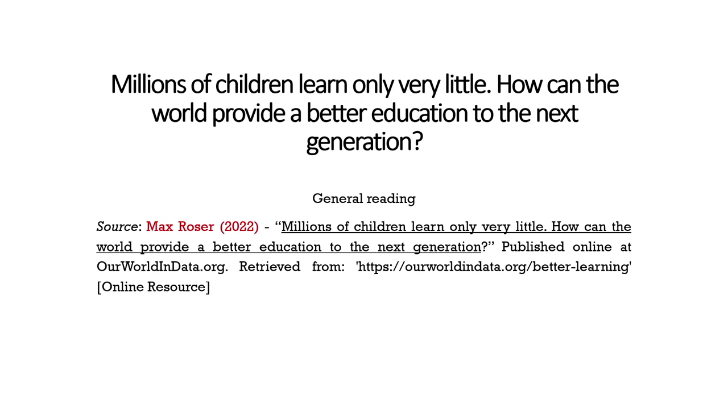In this class, we will study important concepts in demand for education economics. Before that, I would like to discuss a general reading — a paper licensed by Creative Commons — which I found very interesting for taking stock of findings surrounding whether or not children are learning in schools. Let us begin with the paper by Max Roser, which came out in 2022, titled 'Millions of Children Learn Only Very Little: How Can the World Provide a Better Education to the Next Generation?' This was published online at ourworldindata.org.